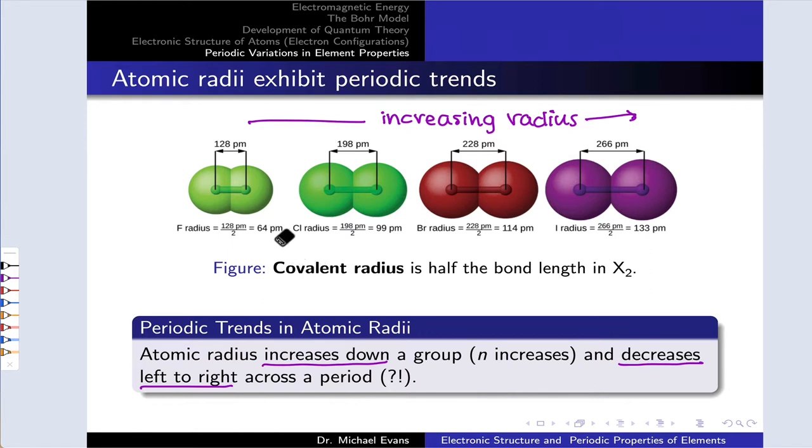What we see if we look at the halogens, group 17, is that atomic radius increases as we move down the group from fluorine to iodine. And this is a general trend. Atomic radius increases down a group. This is our first periodic trend. The reason for this is quite simple. The n value for the valence shell increases. So essentially, the onion has more layers, the building has more floors, and so the atom is bigger.